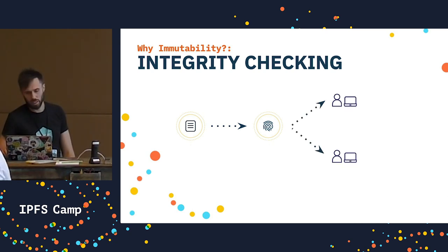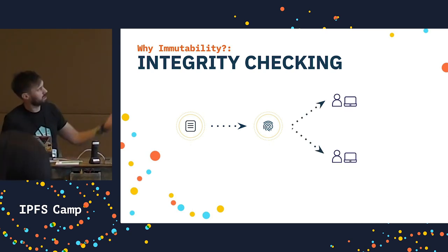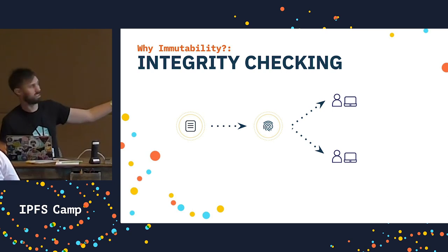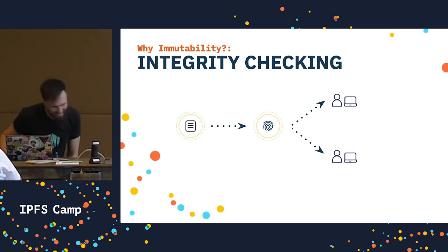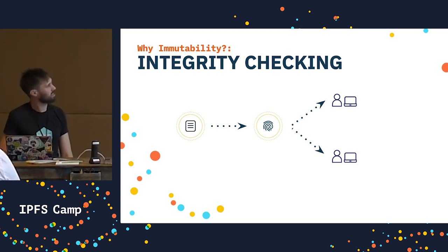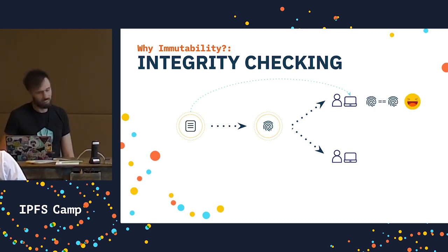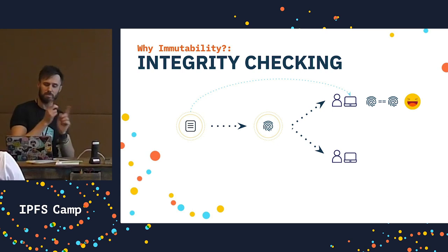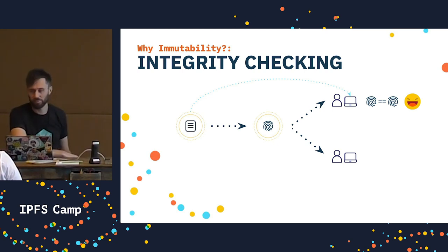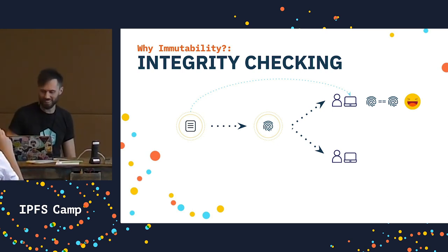Once we've got this hash, we can share it with the rest of the world. When someone gets hold of that data, they also calculate the hash, and then they check that they match. If they do, you've got the data you asked for — winning.